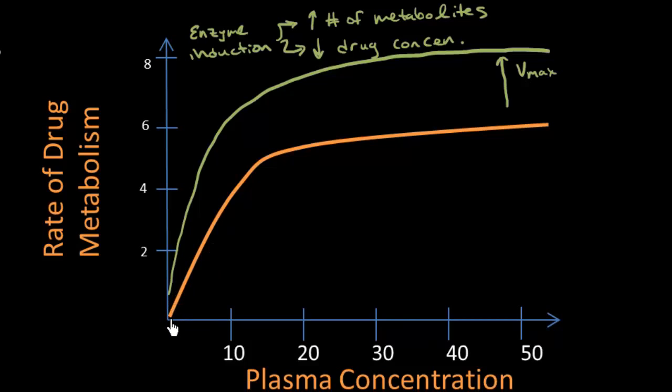I'm going to draw this graph in the presence of a competitive inhibitor. So if there's a competitive inhibitor present, what happens is that the rate of drug metabolism is going to be lower and it's going to be lower at most dosages up to a certain point.